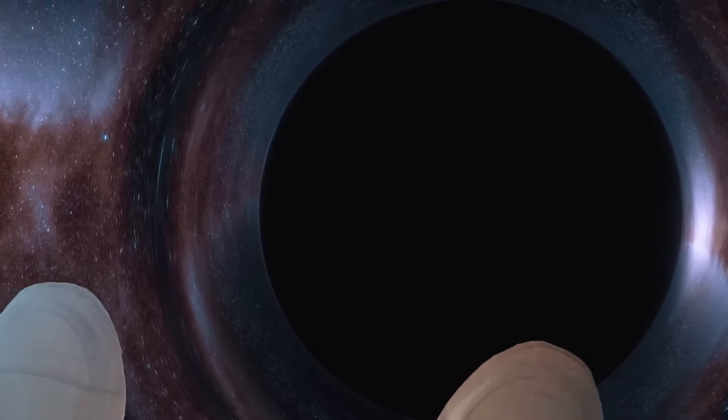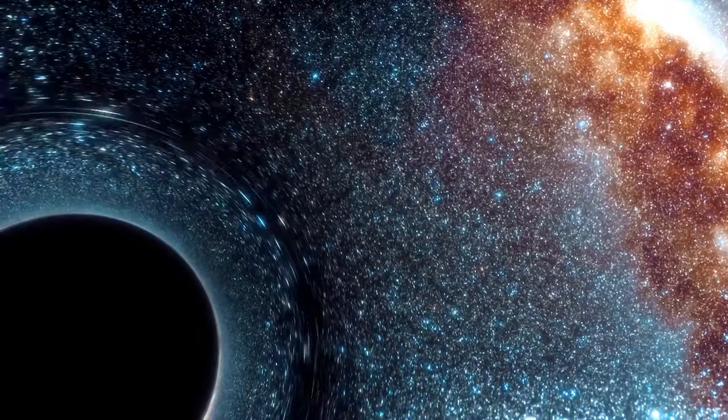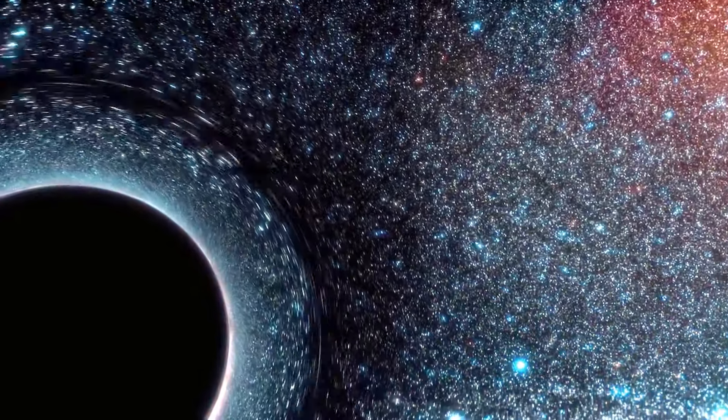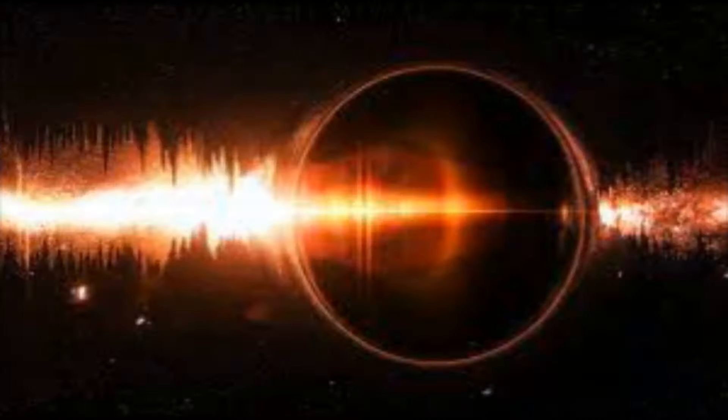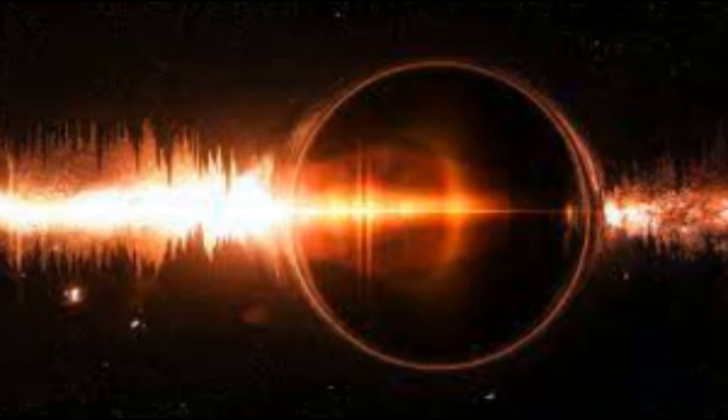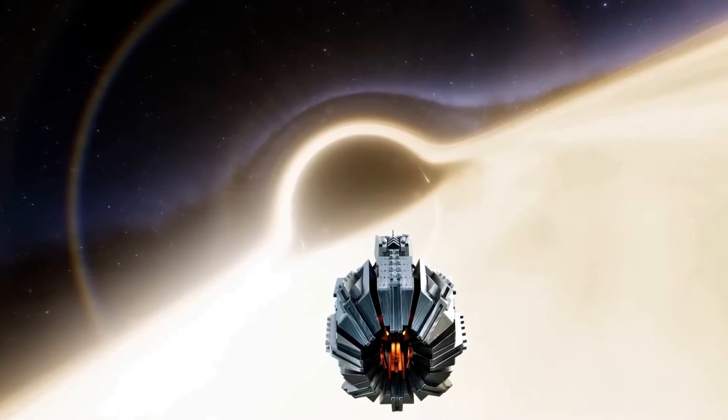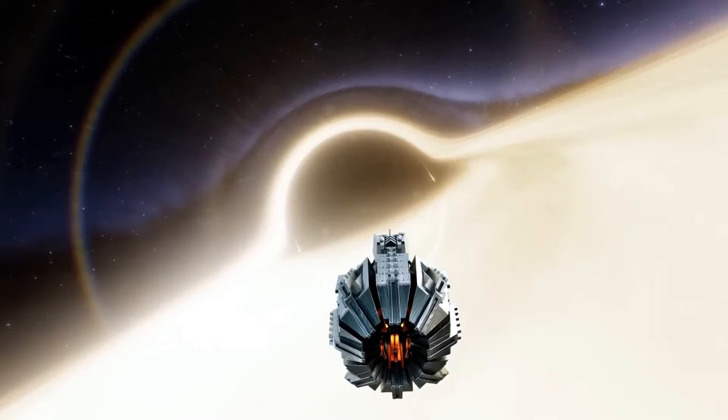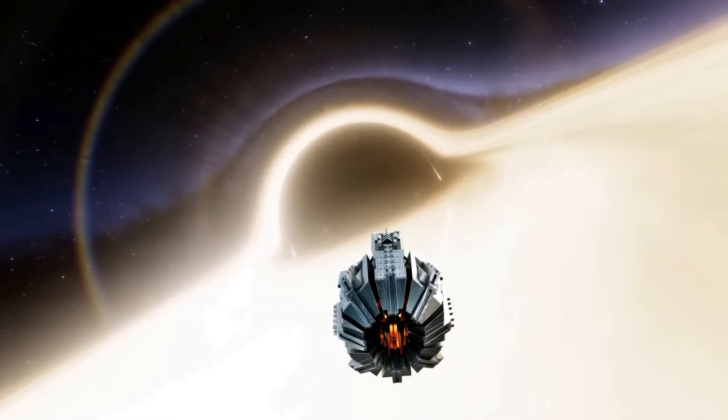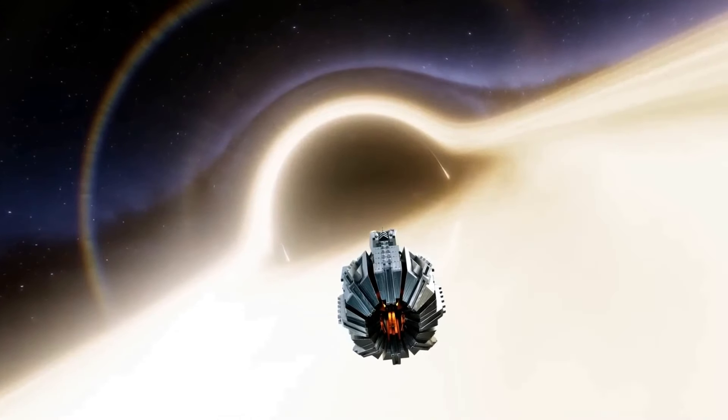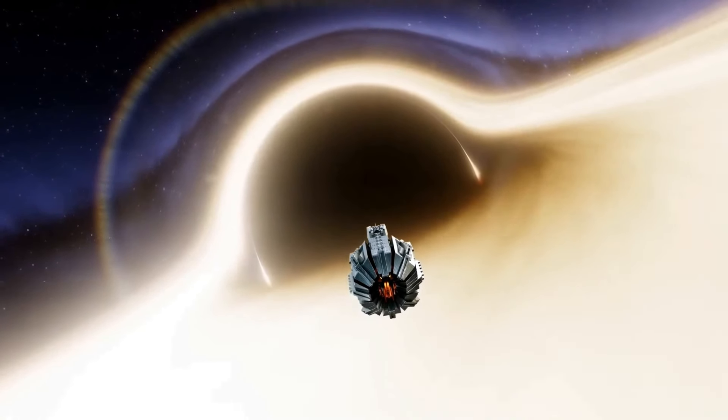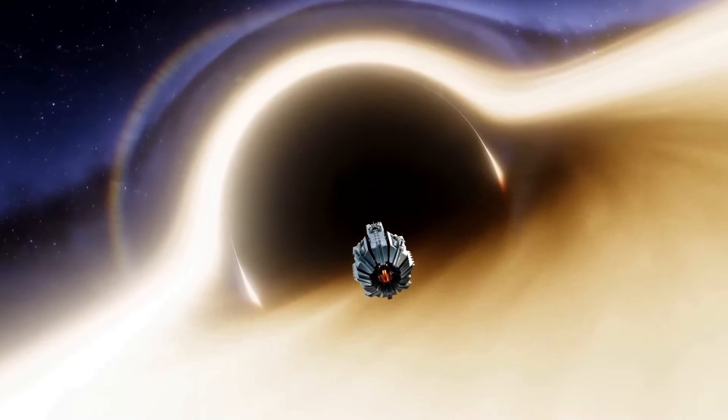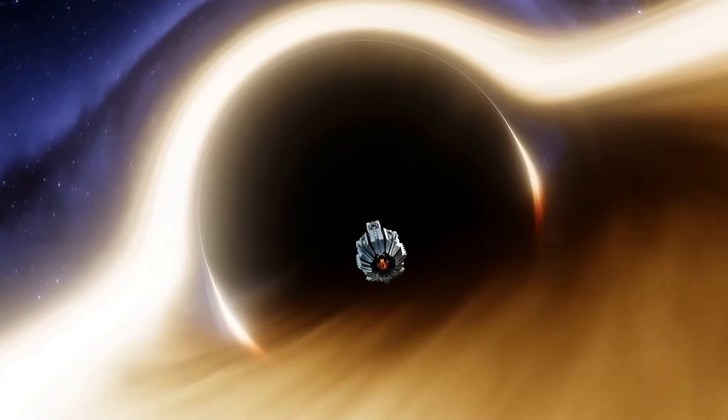An observer falling into a black hole will perceive the information entering at a specific point on the event horizon. On the other hand, an observer outside the black hole will observe the information spreading evenly across the entire stretched horizon before being emitted again. This external observer views the event horizon as a dynamic membrane. From the perspective of an observer plunging into a black hole, the passage of information and entropy via the event horizon is uneventful and lacks any significant occurrences. From an external perspective, the information and entropy are assimilated by the extended horizon, which functions as a dissipative fluid possessing entropy, viscosity, and electrical conductivity.